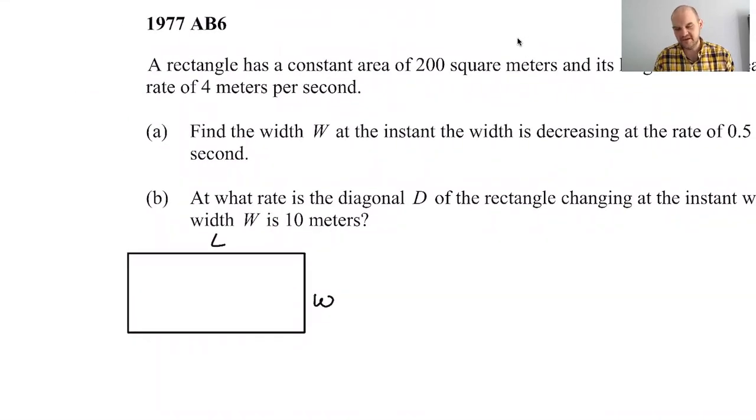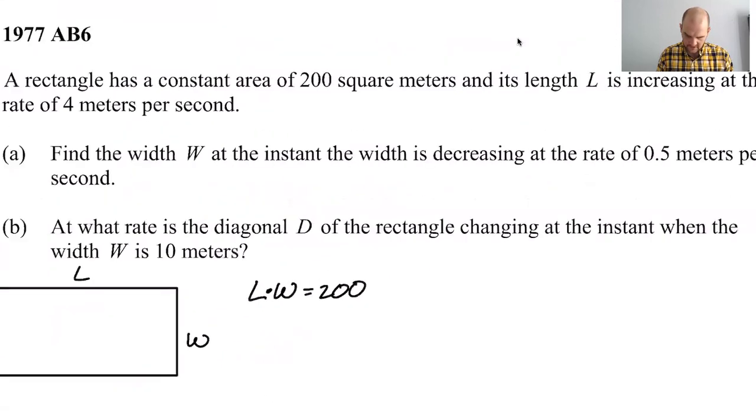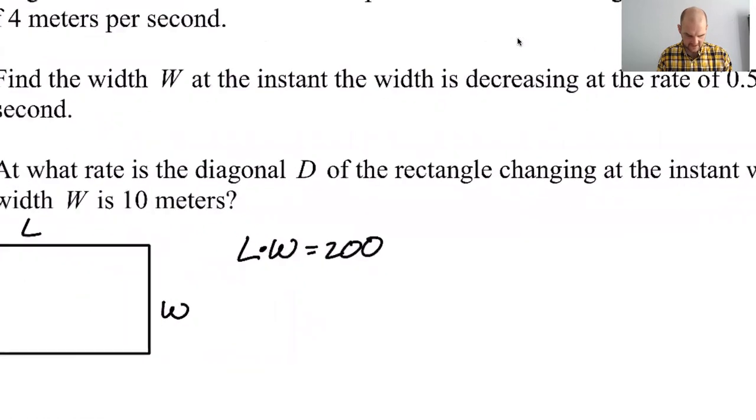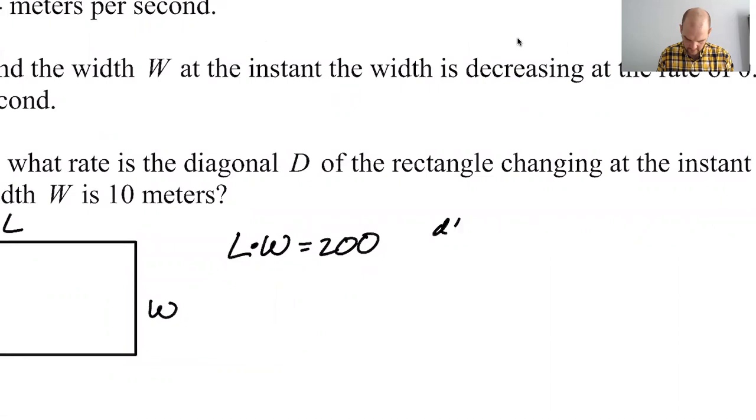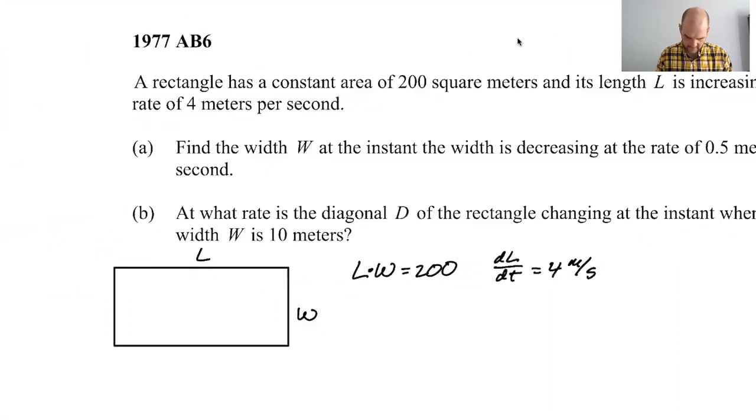We just know that L times W is definitely 200. We also know that dL/dt is positive 4. So it's 4 meters per second. All right.